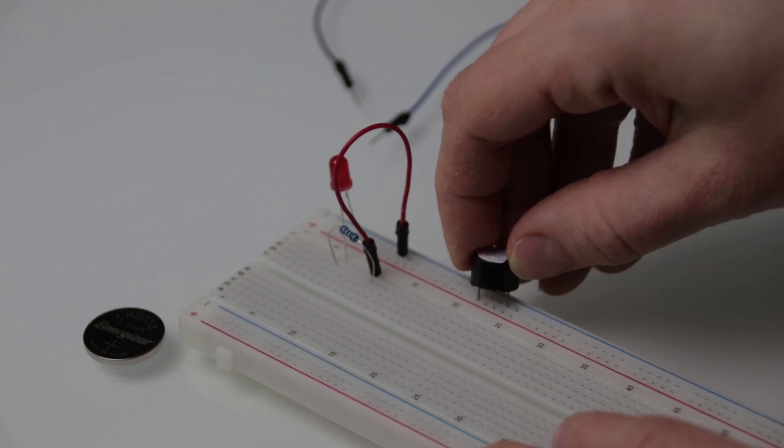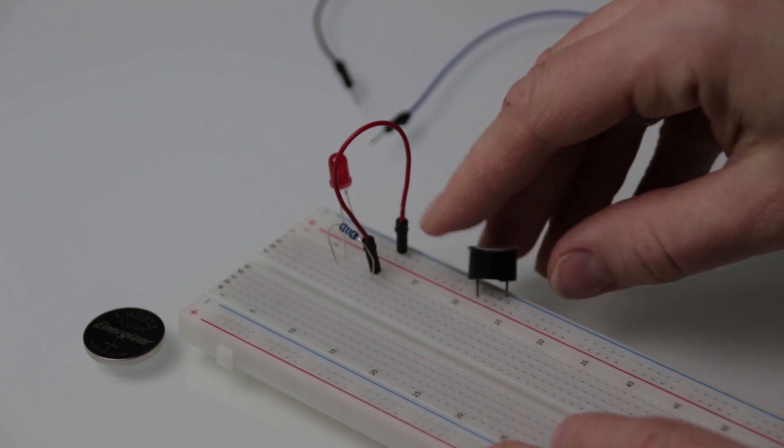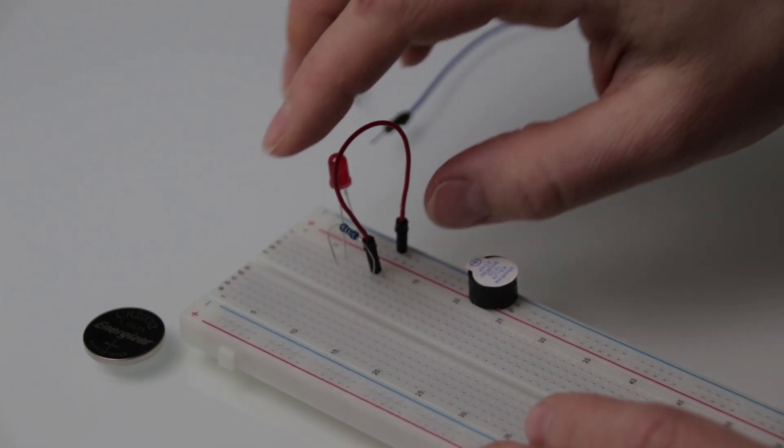Now let's connect the buzzer to the same start and end point as the LED circuit. The buzzer's positive is the longer lead, so I just connect it to the positive and negative rail accordingly.